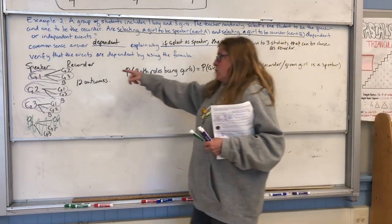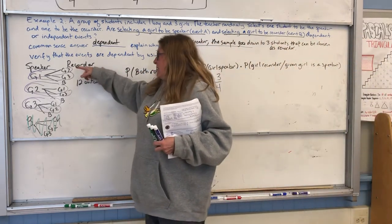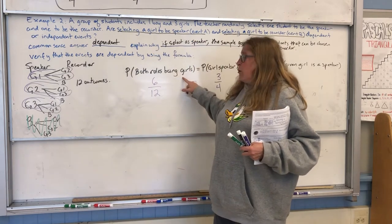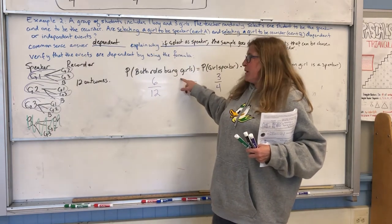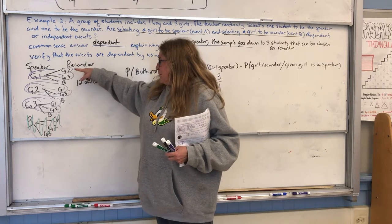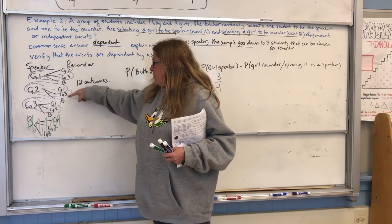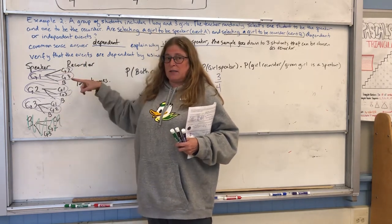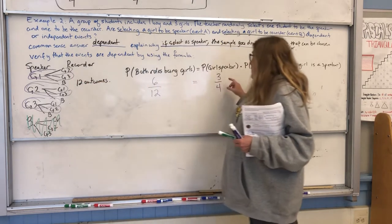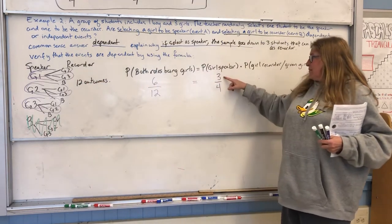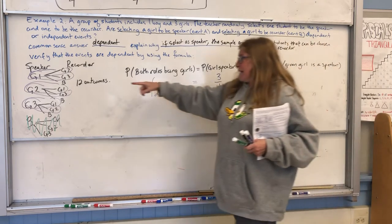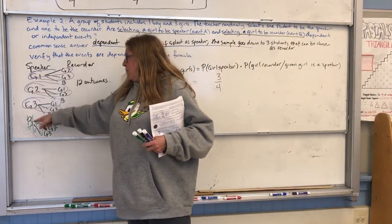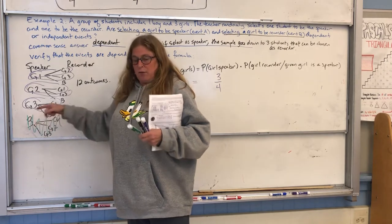Just a quick review. We had a situation where we wanted to know what's the probability of both speaker and recorder being girls. I circled them — it's one, two, three, four, five, six out of the 12 possibilities. Then we talked about what's the probability of a girl being the speaker. Well, there are three girls and one boy, so the probability of a girl being a speaker is three out of four.